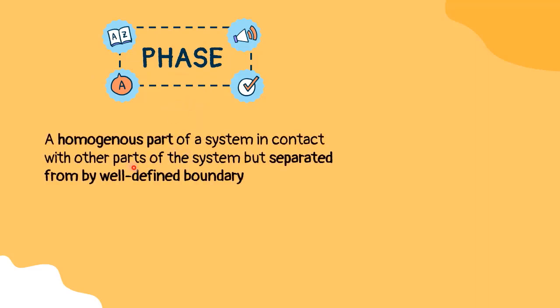Phase is a homogenous part of a system in contact with other parts of the system, but separated by well-defined boundaries. Combining what you have learned so far from 5.1 until 5.3, the phases on a phase diagram will consist of solid, liquid and gas.